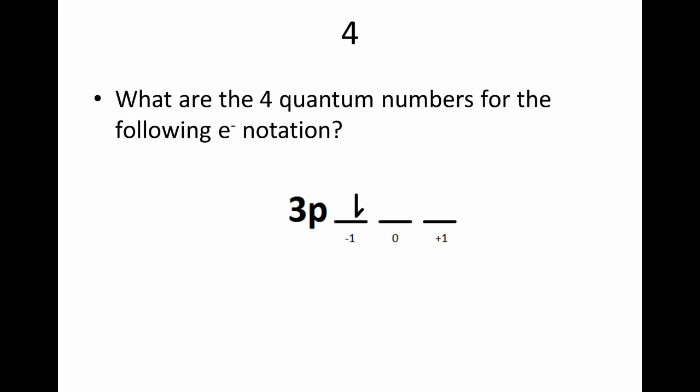Number four asks: what are the four quantum numbers for the following electron notation? N equals three because it's in the third energy level. L equals one because it's in the P sublevel. M sub L equals negative one because it's in the orbital left of the middle one. And M sub S is negative one-half because the arrow is pointing down.